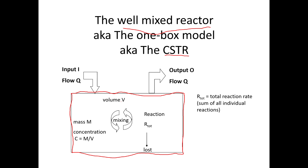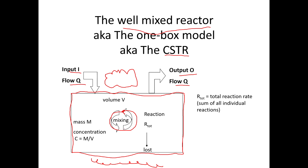It could be the entire ocean, or all of San Francisco Bay. The box is typically drawn around the water, so the sediment down here would be outside the box, and the air up here — I'll draw a puffy cloud — the air is also outside of the box. The box typically includes only the water of your system. You're going to have some flow of water going in, which we call Q.